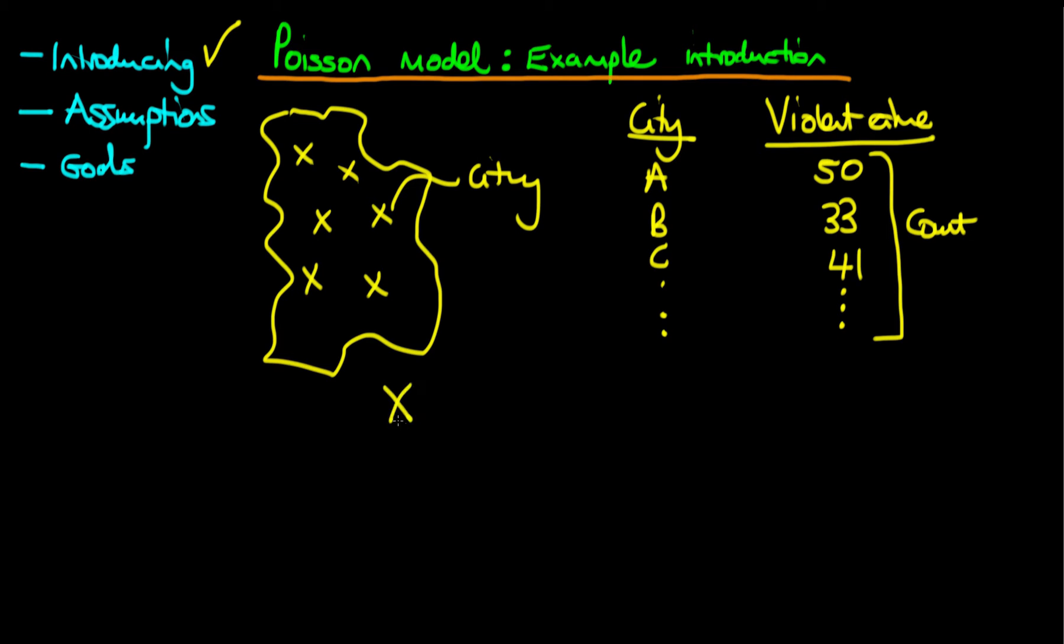What we're going to imagine is that within a given city i, we're going to model the number of crimes using a Poisson distribution, which has a mean rate per month of lambda. So that's the introduction.